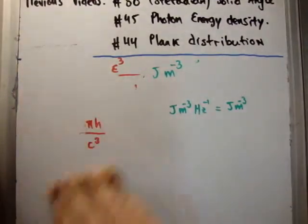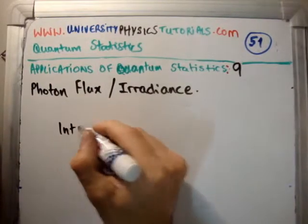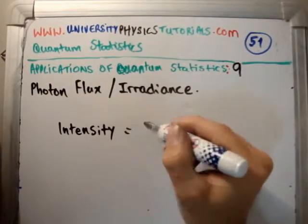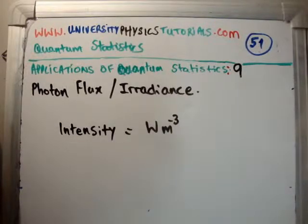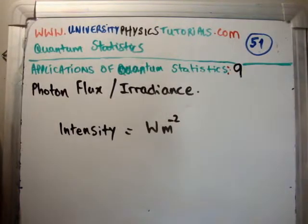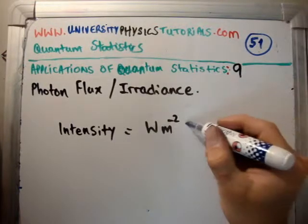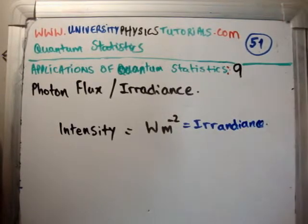Now it's time to work out the irradiance. In classical physics, you talk about intensity, which is equal to watts per meter squared — it's the power moving through an area. That's the intensity. When we're talking about optics, we use the word irradiance, which is also watts per meter squared.